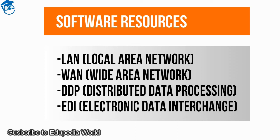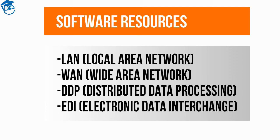The main computer and decentralized units communicate via communication links. A more integrated connection occurs with cooperative processing, where processing is handled by two cooperating geographically distant processors — one processor sends the output of its processing to another for completion. The system becomes more complex when the operating systems of both machines are different, which requires a cooperative operating system to be used.